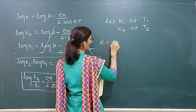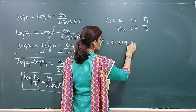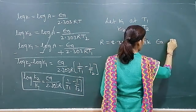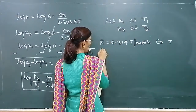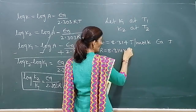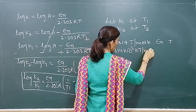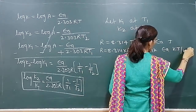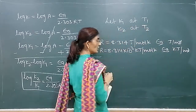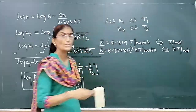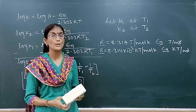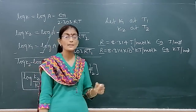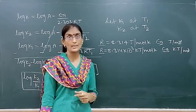R we can take as 8.314 Joule per mole Kelvin if activation energy is given in Joules. We can also use R value as 8.314 × 10^(−3) Kilojoule per mole Kelvin if activation energy is given in Kilojoule per mole. Depending upon the activation energy units, we have to select the units of R. These are the formulas we will use for solving different types of numericals. All numericals on the activation energy topic are given at the back.